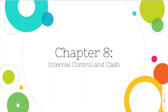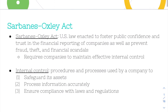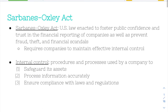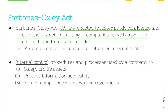Chapter 8 is Internal Control and Cash. First, we're going to talk about Sarbanes-Oxley. Sarbanes-Oxley was a U.S. law enacted to foster public confidence and trust in financial reporting of companies, as well as prevent fraud, theft, and financial scandals. This was enacted after the bankruptcy of Enron and some other companies that had fraudulent accounting practices, causing many people to lose a lot of money. So Sarbanes-Oxley was enacted to restore trust in the financial reporting of companies.